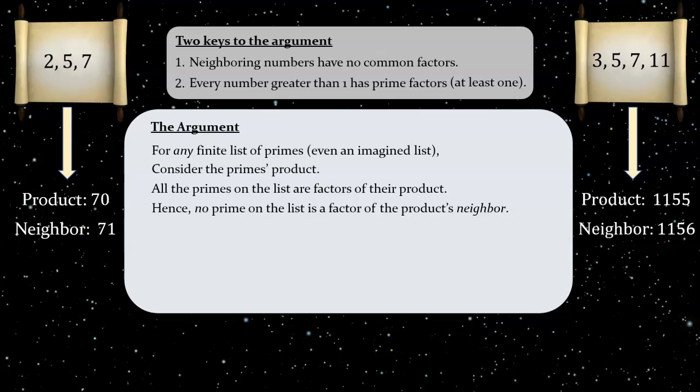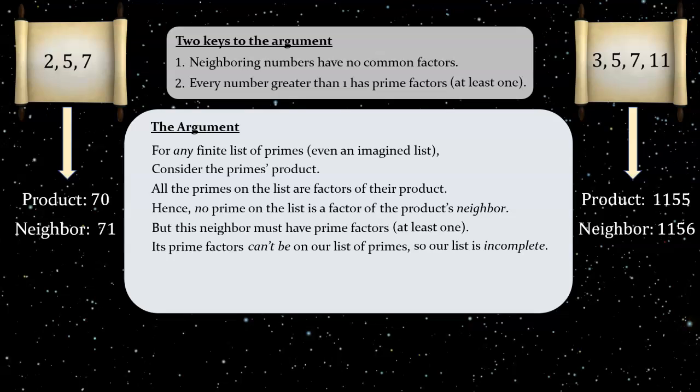So returning to the abstract argument, given any finite list of primes, all the primes on the list are factors of their product. So none of the primes on the list are factors of their product's neighbor. But we know that this neighbor must have prime factors, at least one. This follows from our second key fact. What can we say about the prime factors of the product's neighbor? Its prime factors can't be on our list of primes, because if they were, then they would be common factors of neighbors, which is impossible. So our list is incomplete. That is, whatever else we might say about our abstract finite list of primes, it definitely isn't a complete list of primes, since we've deduced that there must be primes, at least one, that aren't on it.